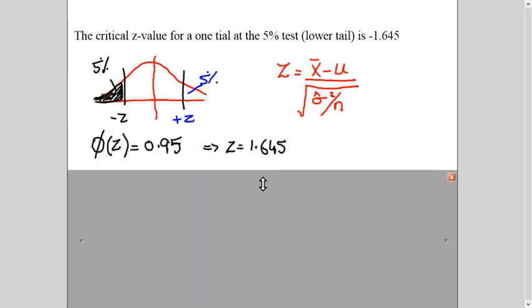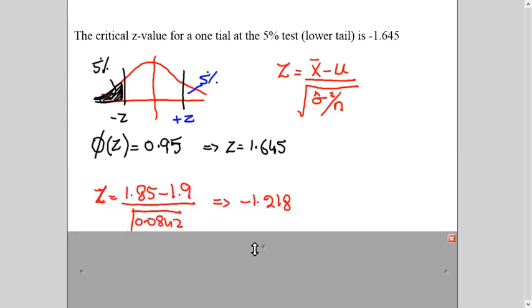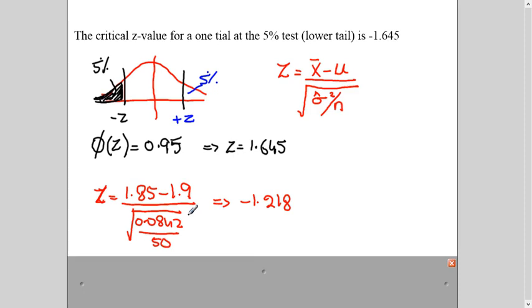So now we are substituting the values in the formula. Here I have substituted. And I got minus 1.218. So if this is minus 1, sorry, let me change the color so that it has become a little prominent. So if this is my minus 1.645, what do you think this value, where it will be? It will be here or here? Of course, it will be somewhere here. Because minus 1.218 is greater than this. It means you are not in the critical region.